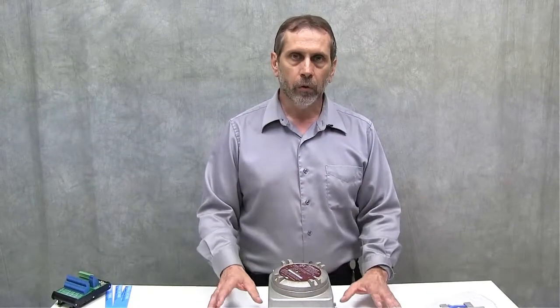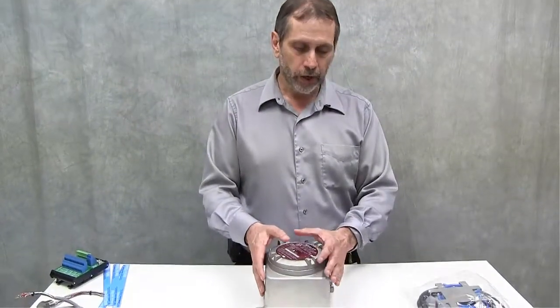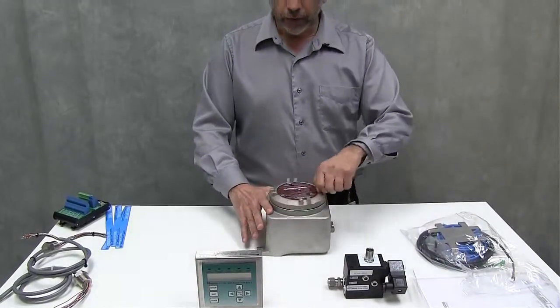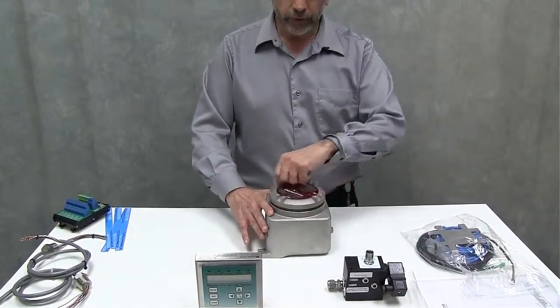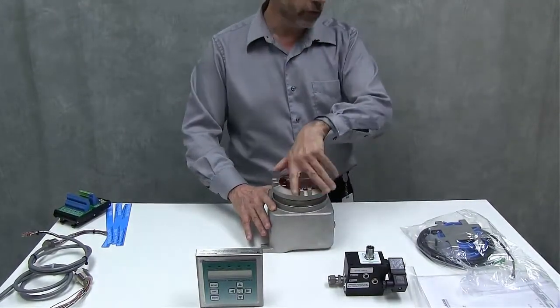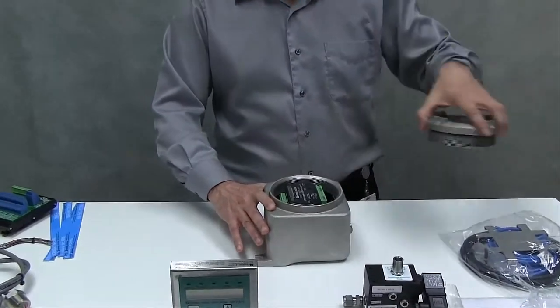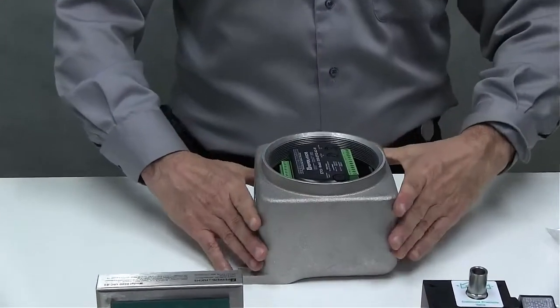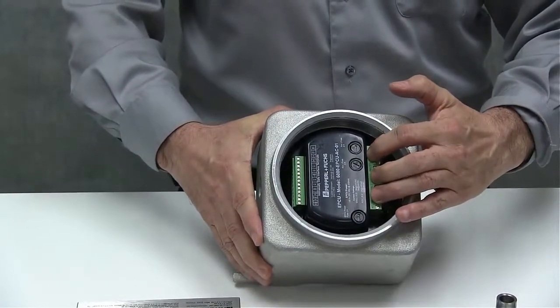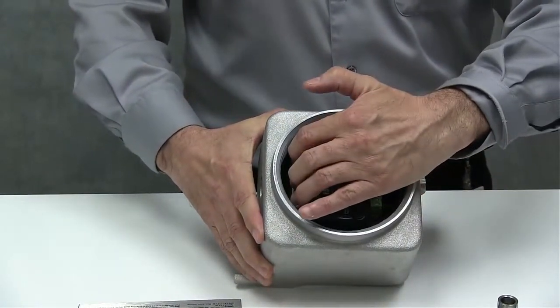When you order a 6000 series component kit you get several components with it to utilize in a purge pressurization system. For example, you have the explosion proof enclosure that houses the EPCU. Now this is the brains behind the purge pressurization system for the 6000 in a type X system. Inside here you have the EPCU with terminals for power and contact outputs and then all your field devices that come in.